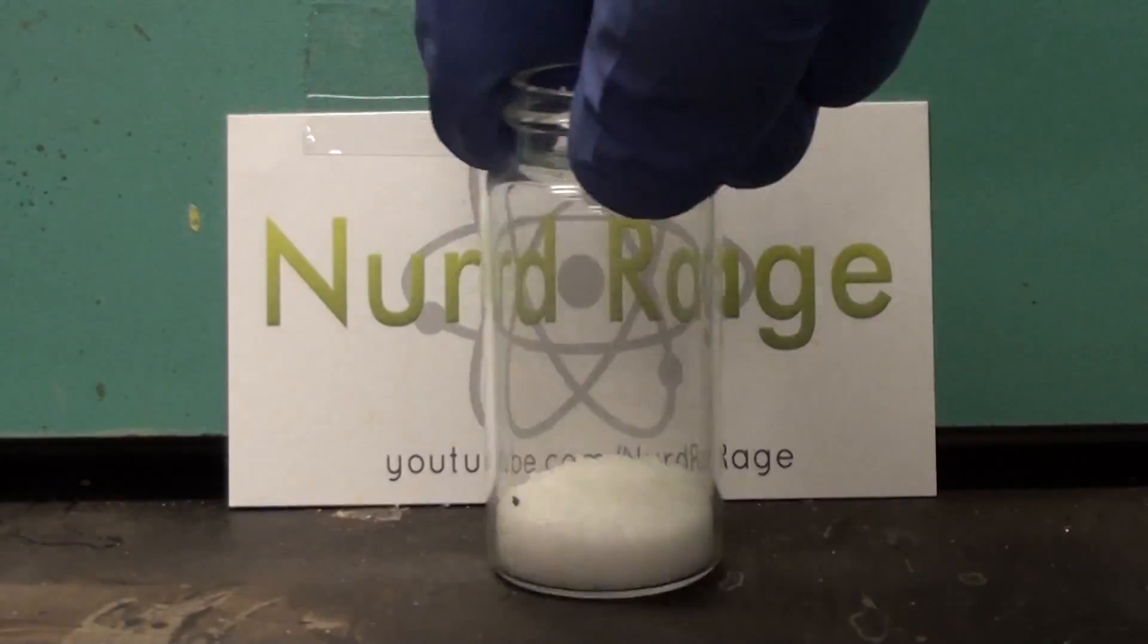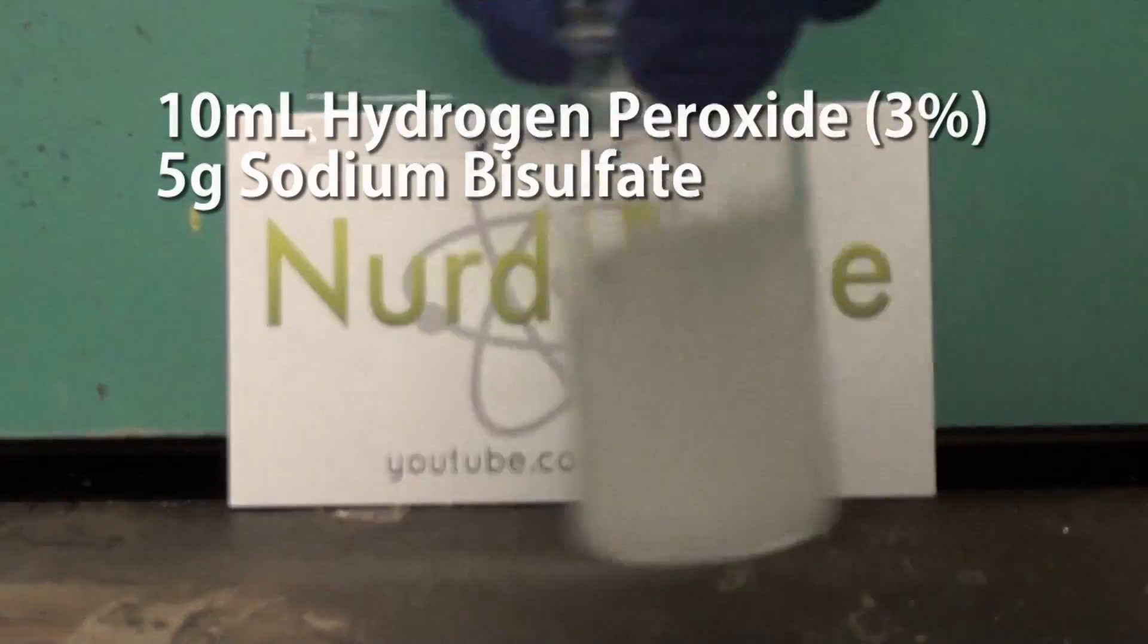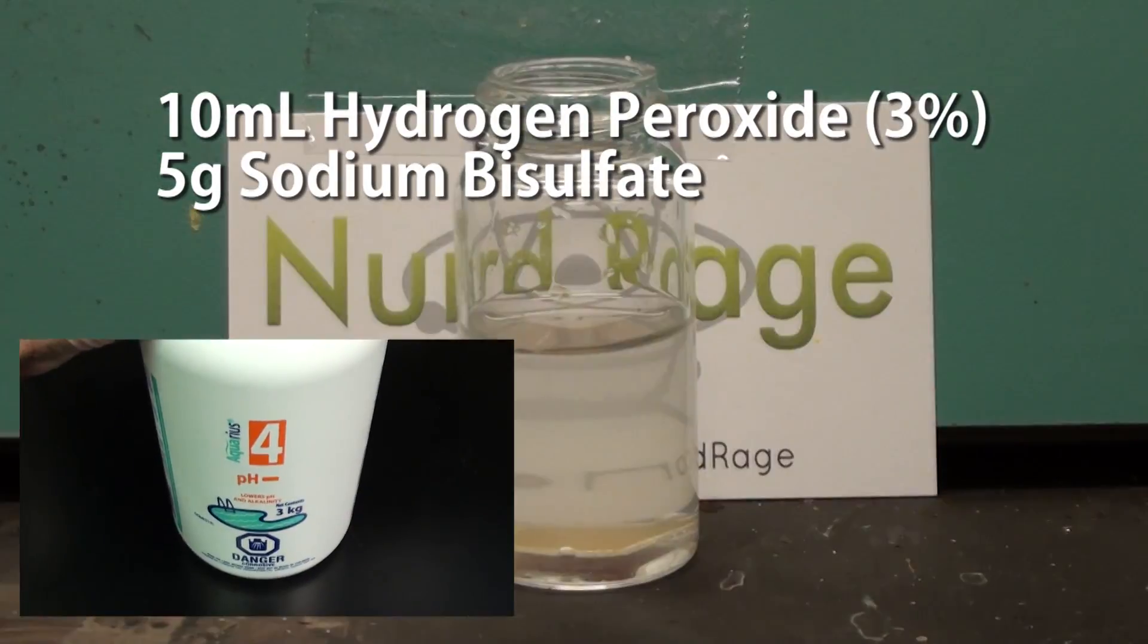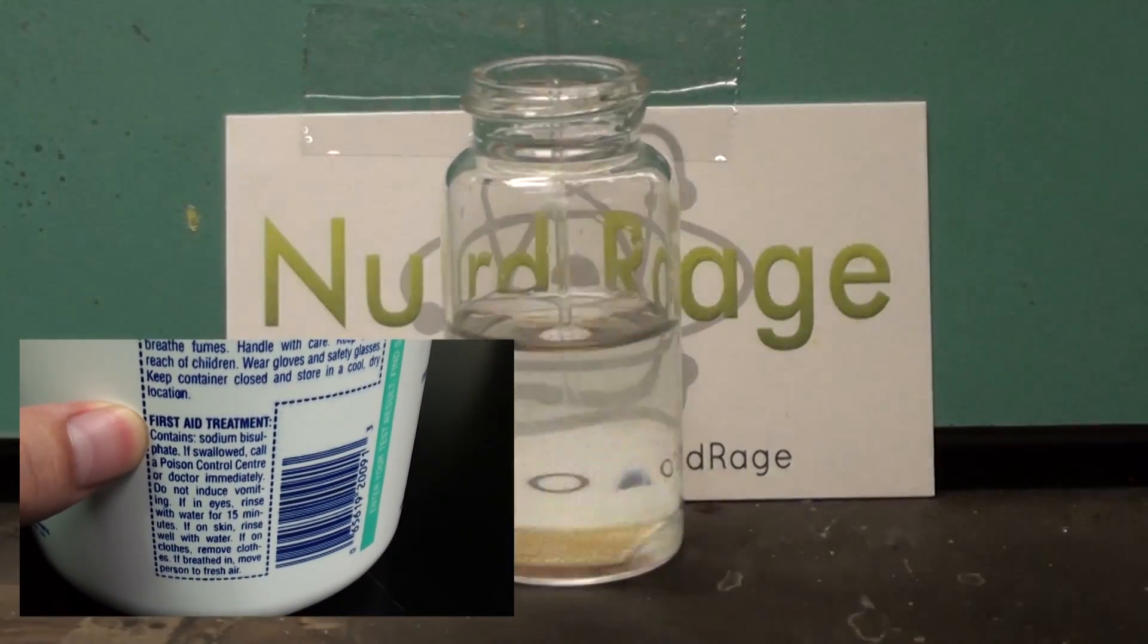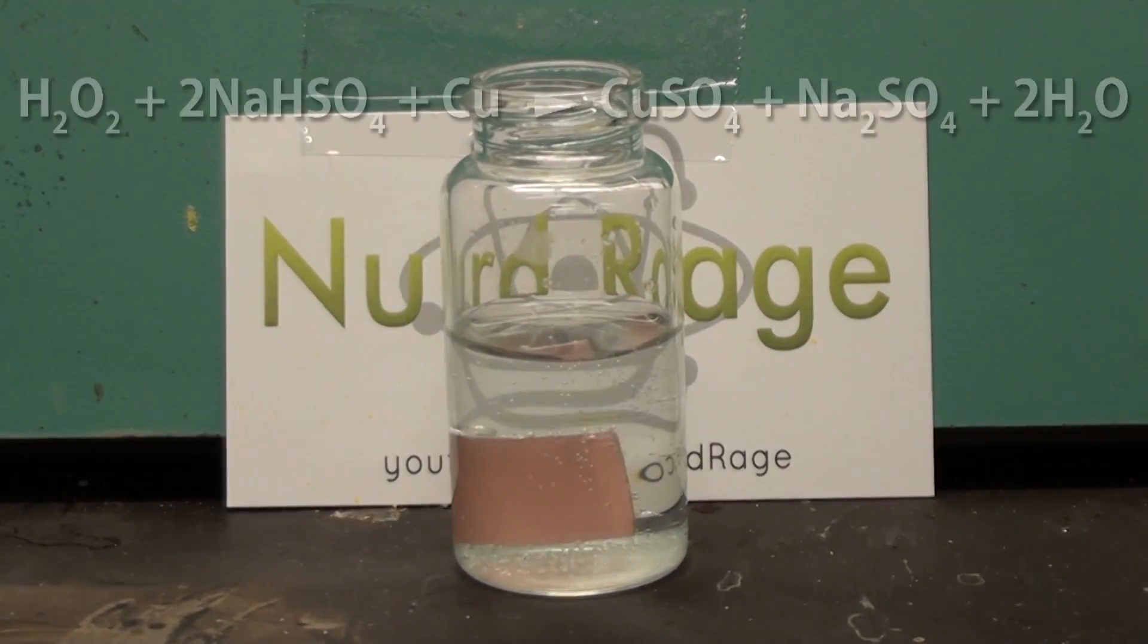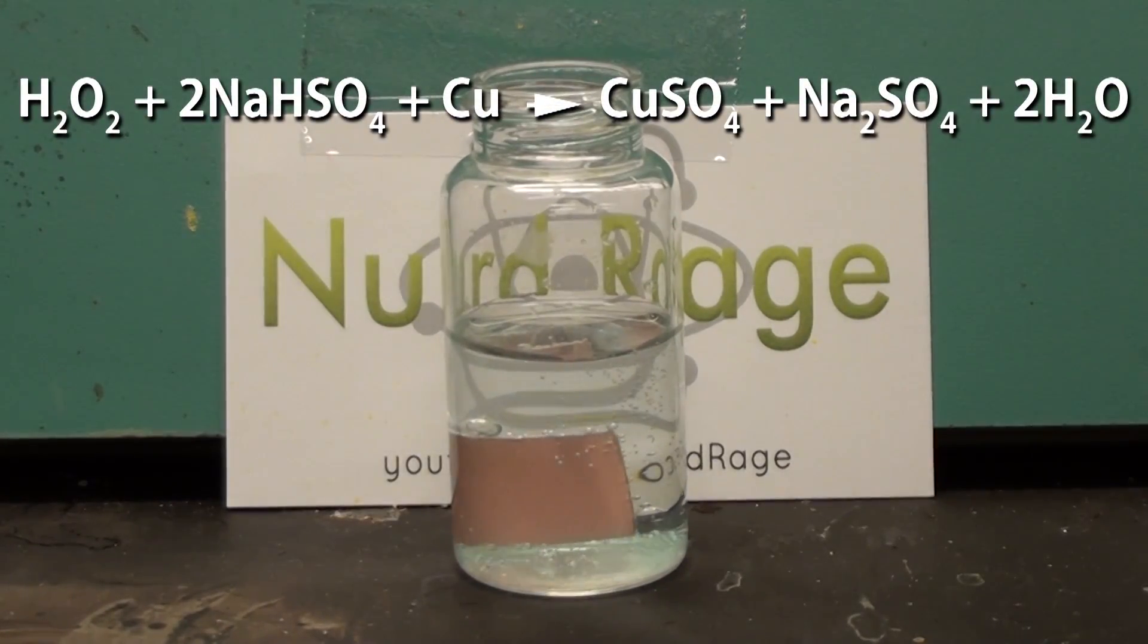The third peroxide family etchant is hydrogen peroxide and sodium bisulfate. Sodium bisulfate is a little easier to get than sulfuric acid as it's sold as a pH lowering chemical for swimming pools. It works like the sulfuric acid version and produces a combination of copper sulfate and sodium sulfate. The downside is that it's extremely slow and takes hours to do what the other etchants can do in minutes.